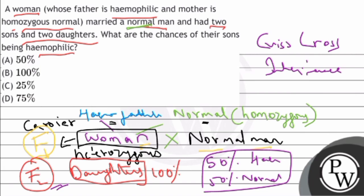What are the chances of the sons being hemophilic? The sons will be 50% chances. 50% can be hemophilic, 50% can be normal. So the correct option is option A, 50%. Thank you.